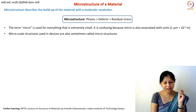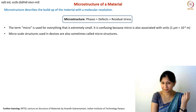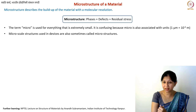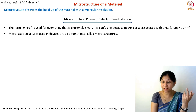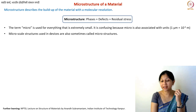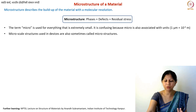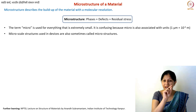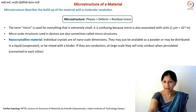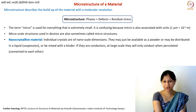Microstructure can be confused with micro-scale structures, since nowadays we do micro-fabrication and nano-fabrication making devices in the micrometer domain (10⁻⁶ meters). In this course, to avoid confusion, when I talk about micro-scale structures I'm going to use 'micro-structures' with a hyphen, meaning a device. When I write 'microstructure' as one word, I mean the materials science definition — phases, defects, and residual stress.